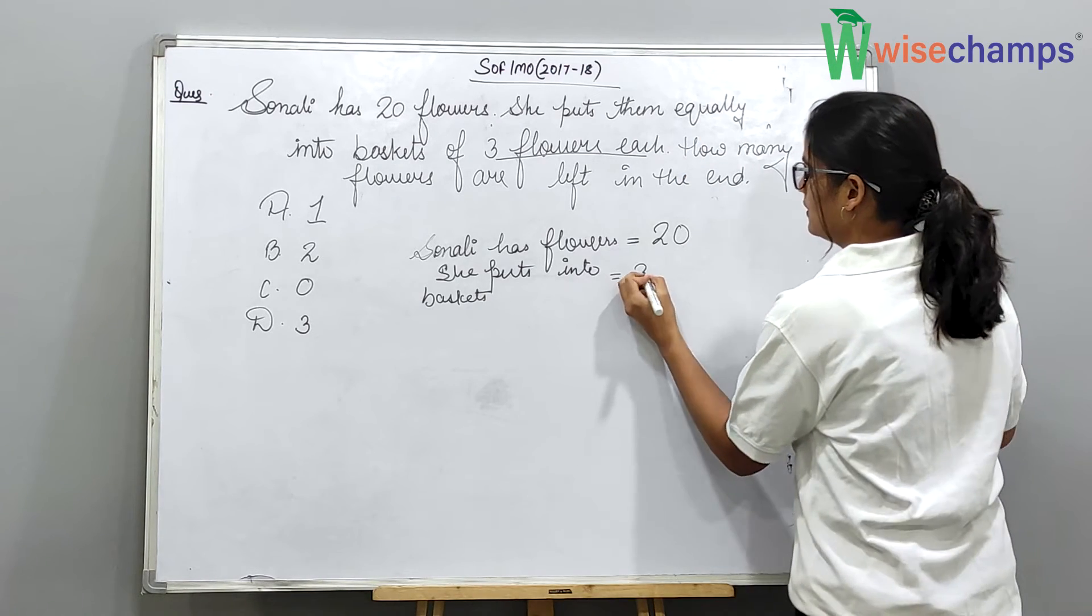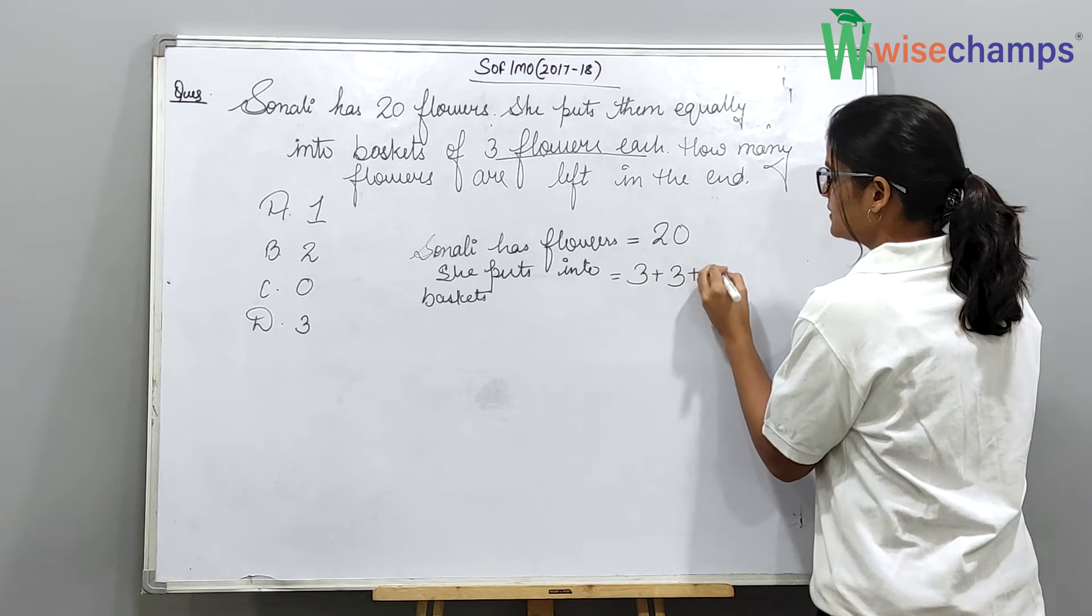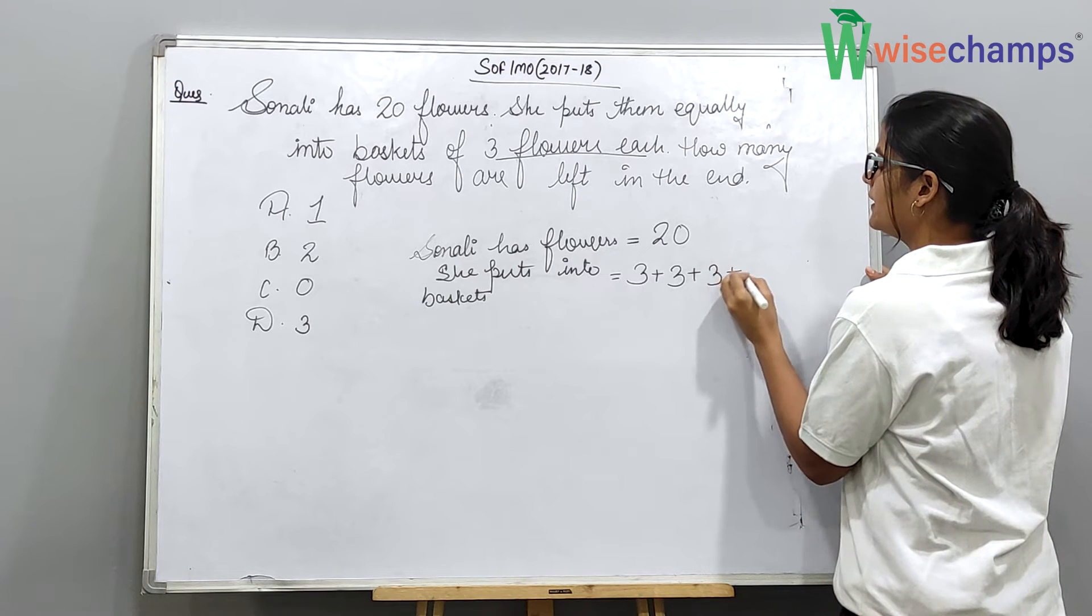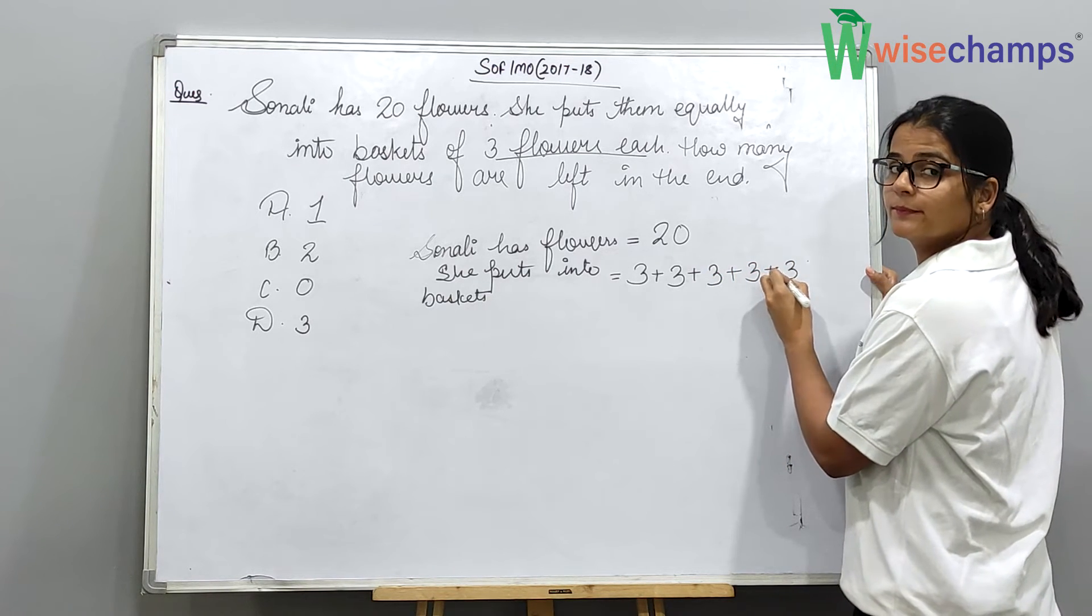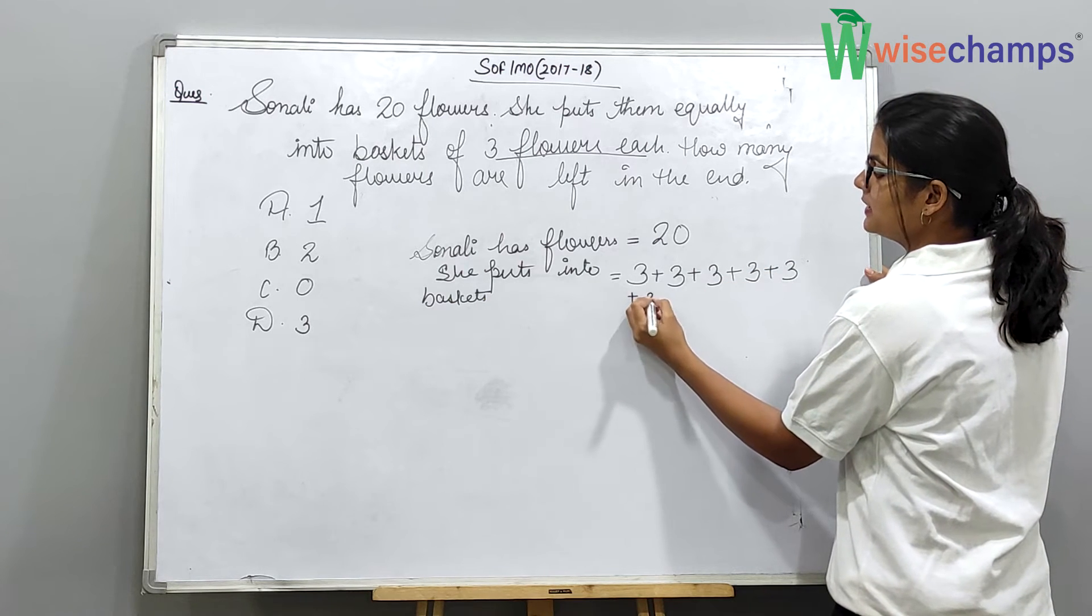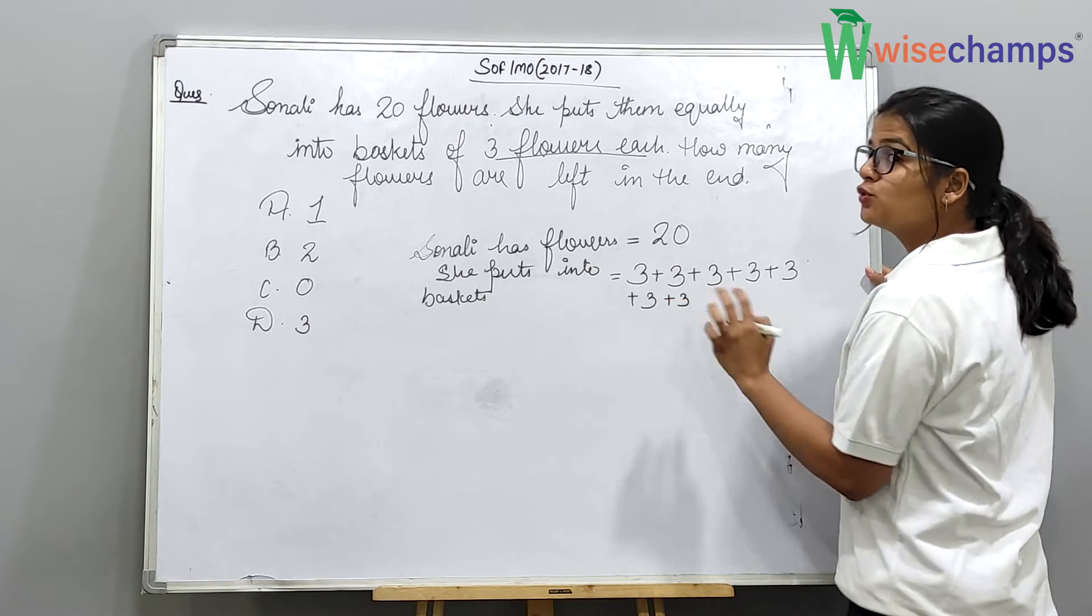So 3 plus 3, 6. Very good. 6 plus 3, 9. 9 plus 3, 12. 12 plus 3, 15. 15 plus 3, 18. And 18 plus 3, 21.